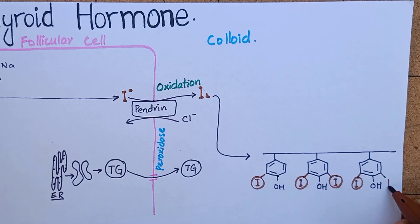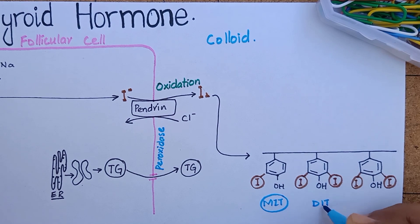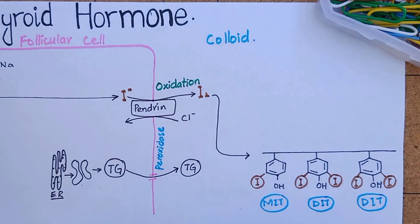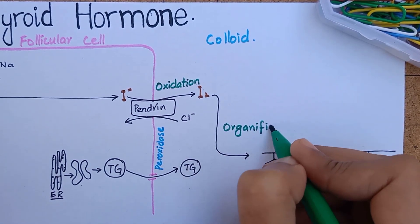Tyrosine is first iodized to MIT when one iodine is attached and then to DIT when two iodines are attached. This initial iodination of tyrosine is called organification.